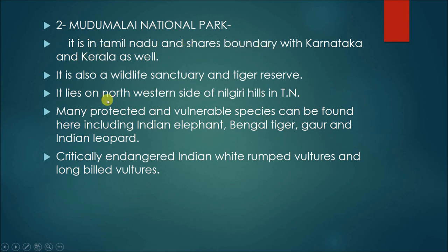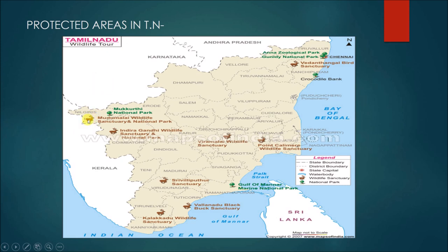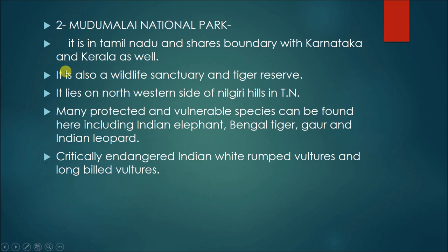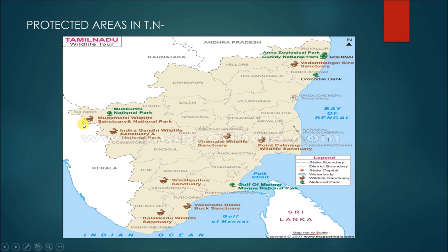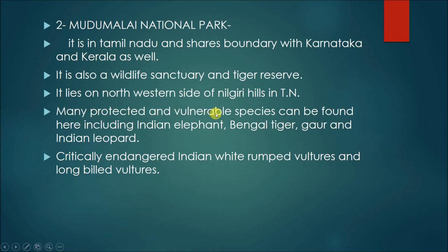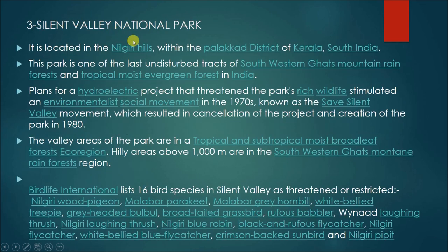Madhumalai National Park is in Tamil Nadu and shares a boundary with Karnataka and Kerala. It is also a wildlife sanctuary and tiger reserve, lying on the northwestern side of the Nilgiri hills in Tamil Nadu. Many protected and vulnerable species can be found here including Indian elephant, Bengal tiger, gaur, and Indian leopard. Critically endangered Indian white-rumped vultures and long-billed vultures are also found in Madhumalai National Park.